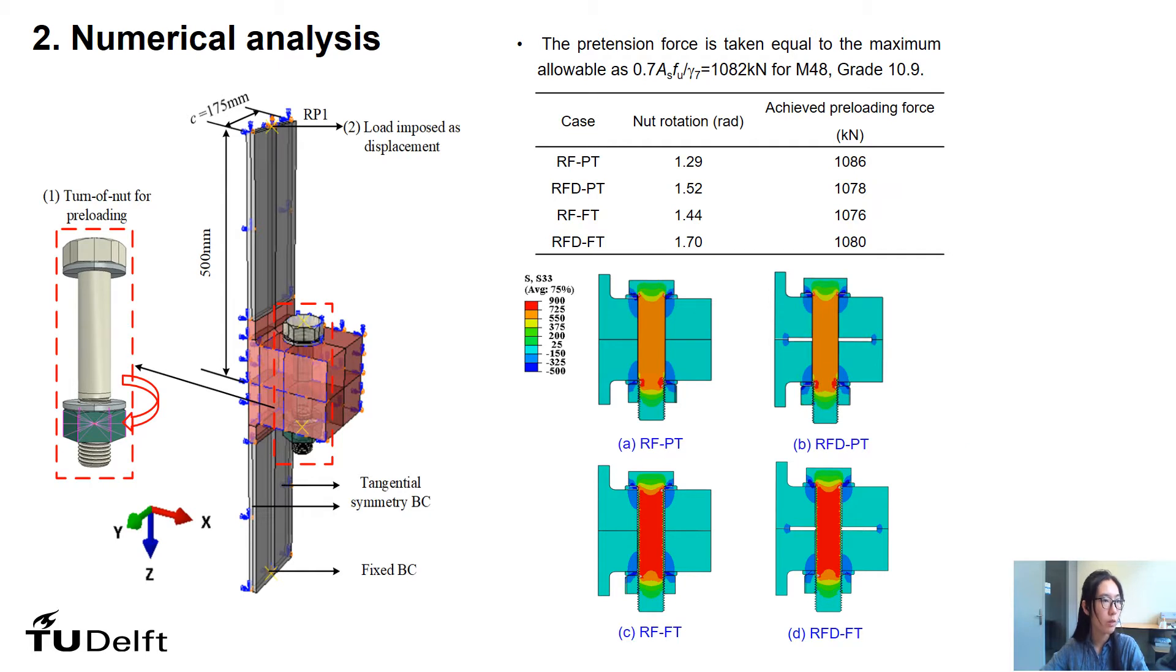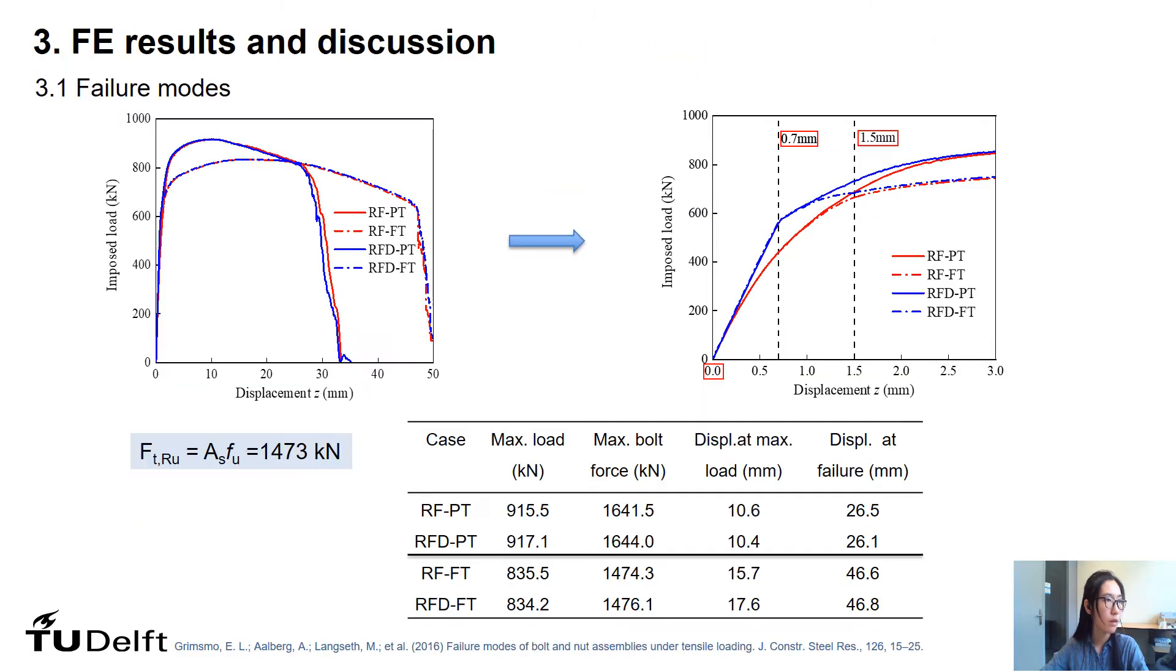After that, a displacement along z-direction is applied to the reference point RP1 at the top of the segment. The calculation is finished until final failure and the relationship between the imposed load and the displacement in z-direction of the reference point is shown in the left figure.